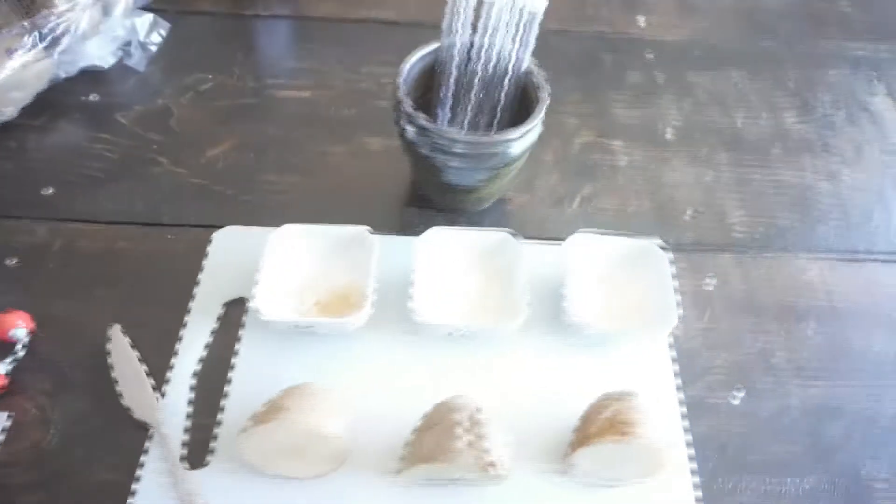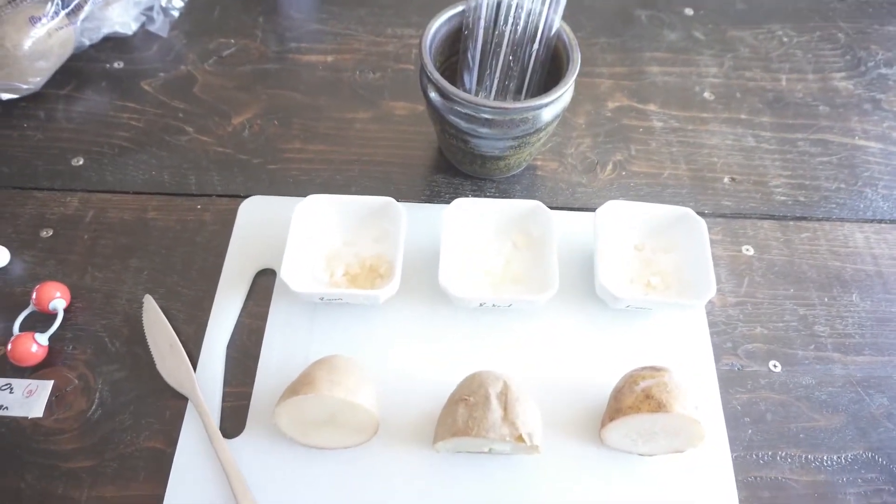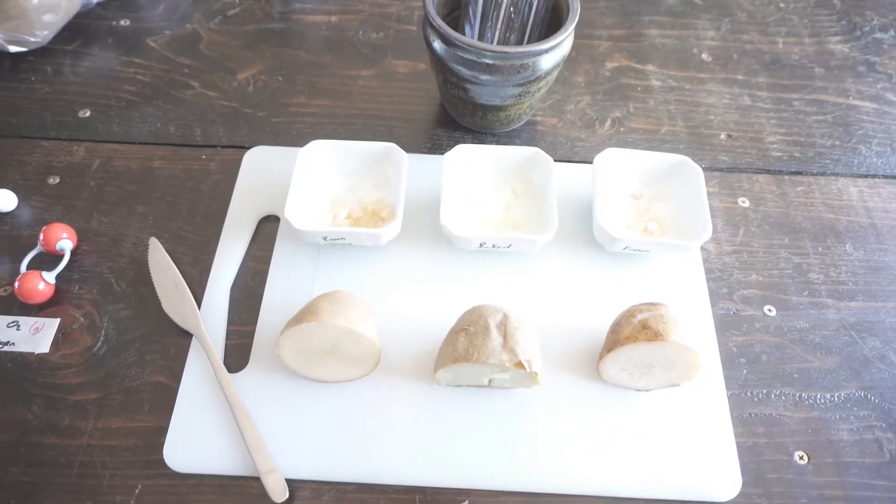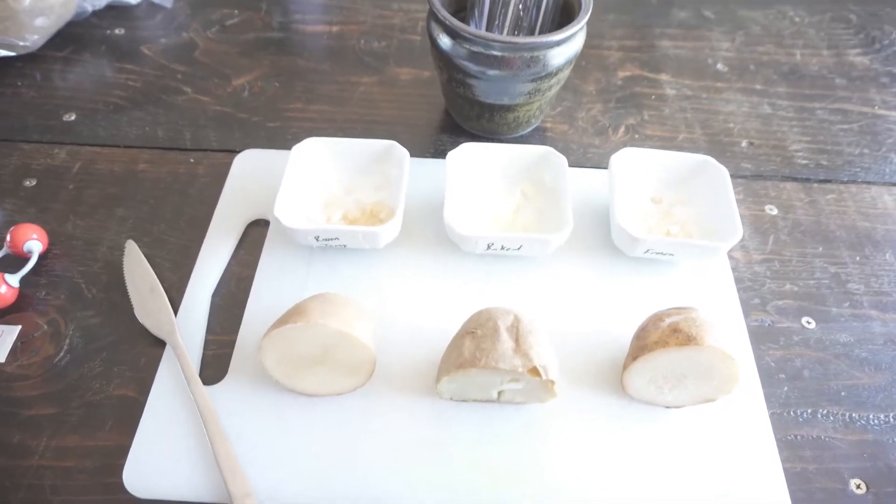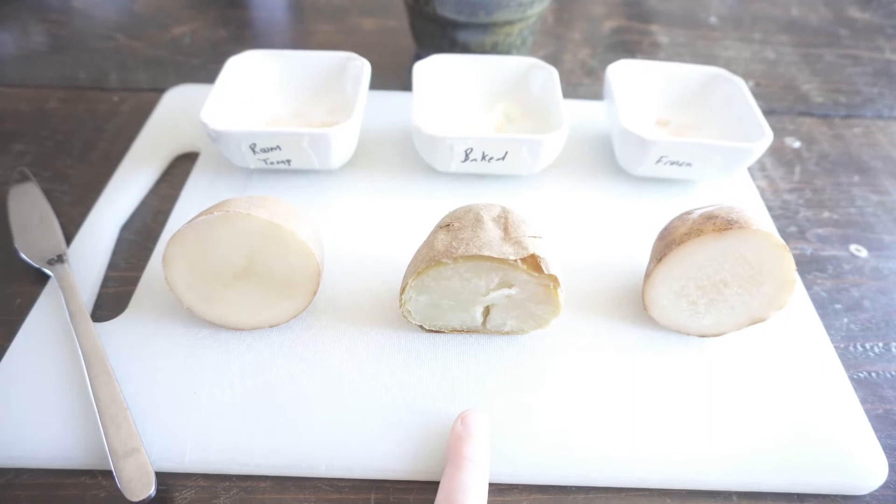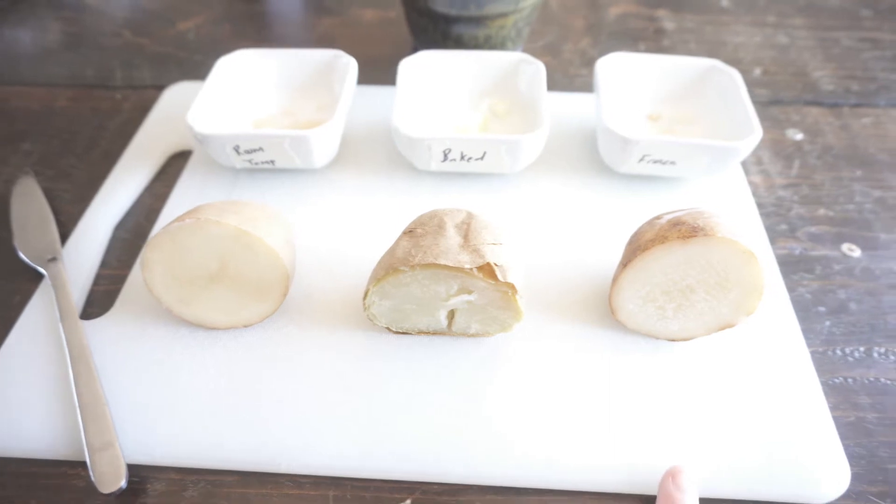All right, we're going to move on to the actual experiment which we have set up ahead of time. So Elliot actually has already minced five grams of potato. We had a potato, just a regular old potato kept at room temperature. We have another potato, it's a baked potato. We baked it for half an hour at 450 degrees Fahrenheit in the oven.